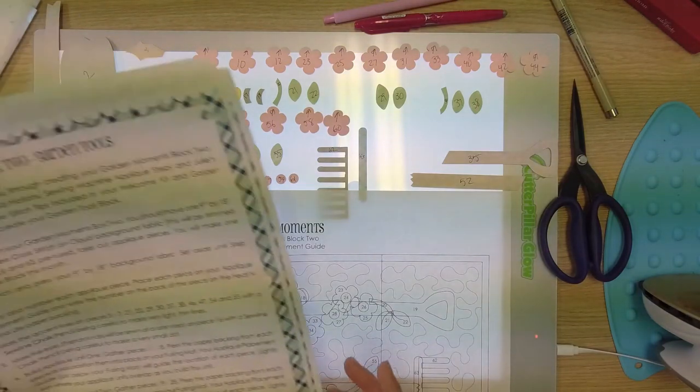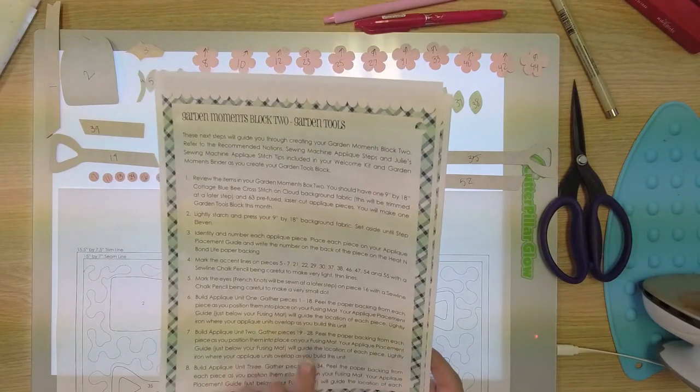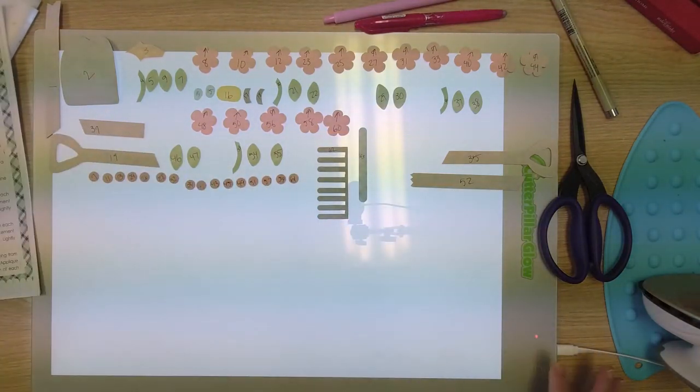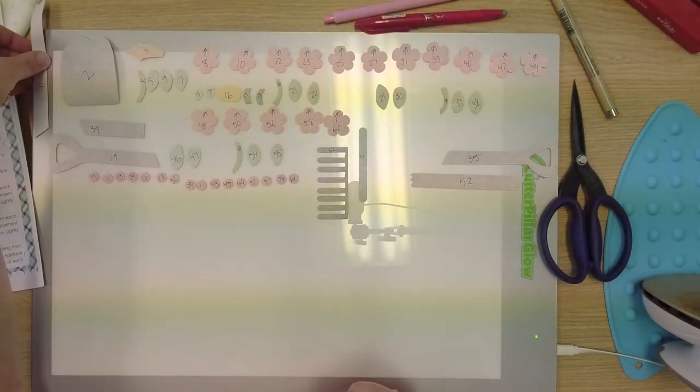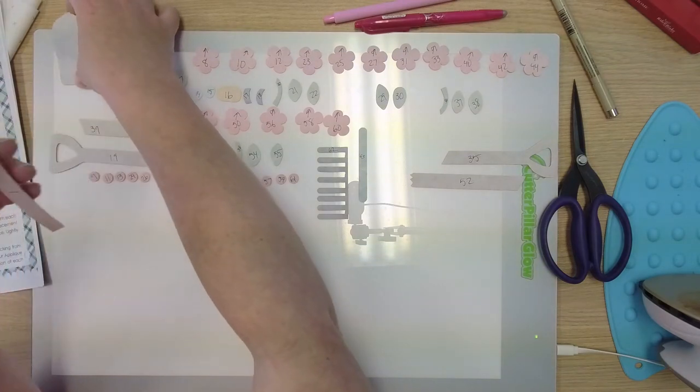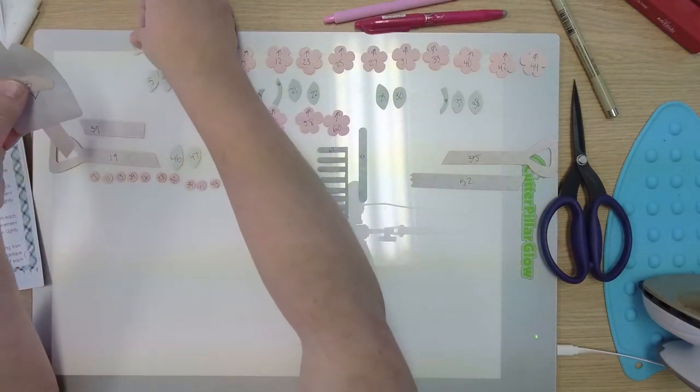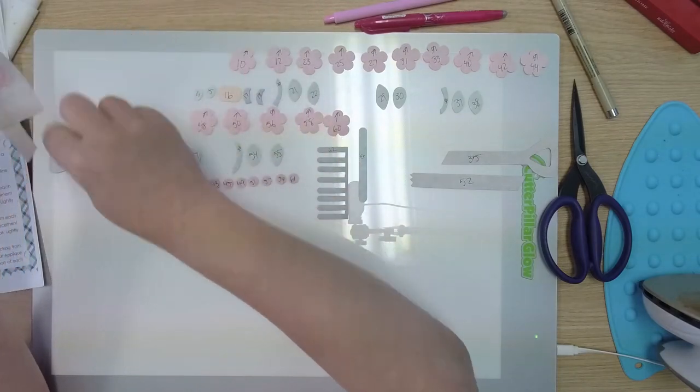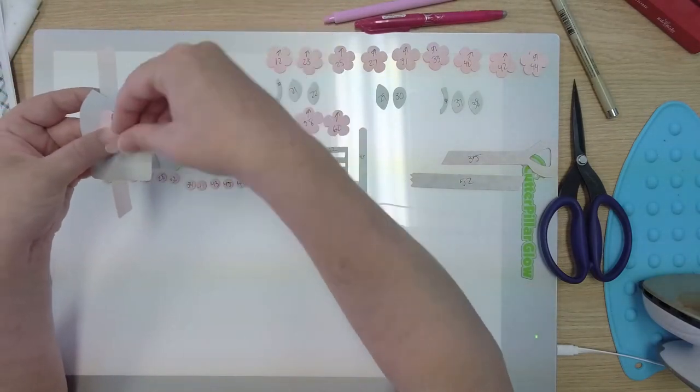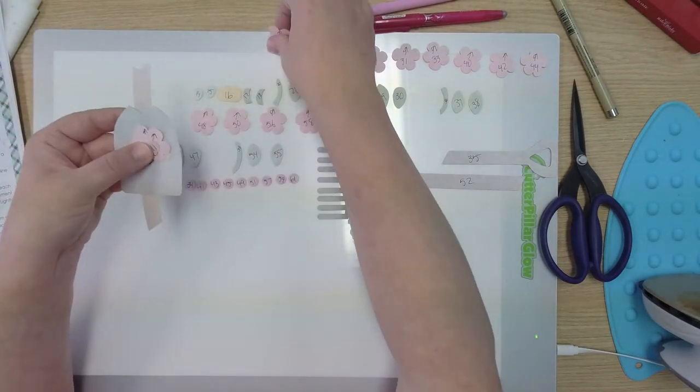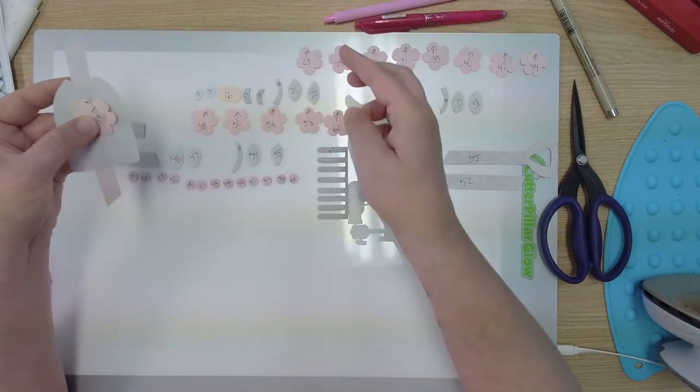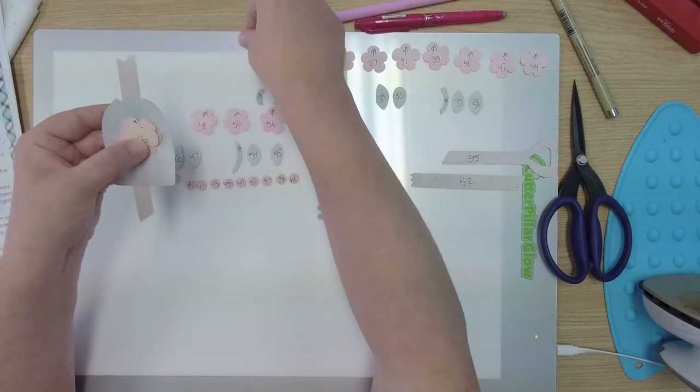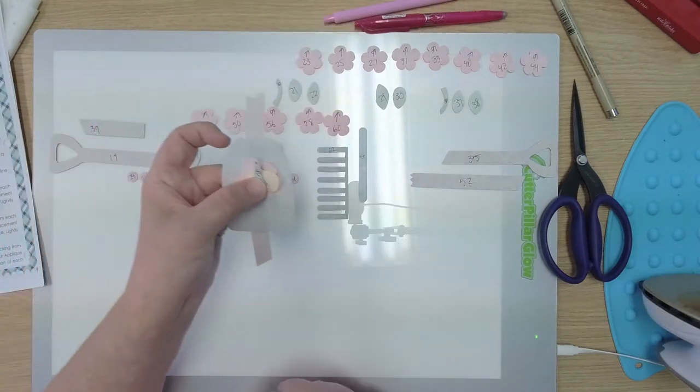So pretend you have all your accent lines marked. Now what we're going to do is start building piles of our applique unit. So first we're going to gather pieces one through 18 and we're going to make a pile. So I can move my placement guide out for right now and I can turn my light pad off. So I'm just going to grab them in numerical order. I'm showing you this because to me, it's a great tip on how to organize your applique pieces as you prepare to build your applique units.